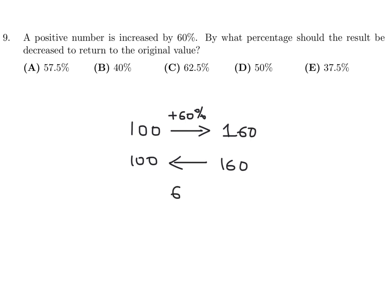So we have to figure out 60. We have to decrease by 60, obviously, but 60, what is that as a percentage of the original value, which is 160? So that's what we're trying to figure out. So 60 over 160, if you plug this into your calculator, is 37.5%. So number 9, the answer is E.